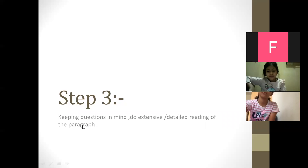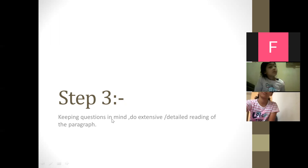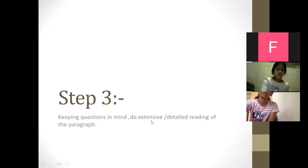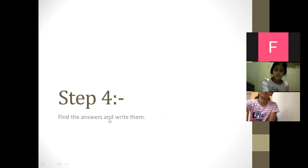The third step: keeping the questions in mind, do an extensive and detailed reading of the paragraph. All the questions you have read after the first reading — you keep them in mind, because this time in the third step you are doing the detailed reading of the whole paragraph again, trying to understand what is there and find out the answers to the questions. In the fourth step, you find the answers to all those questions and write them in the space provided on the sheet.